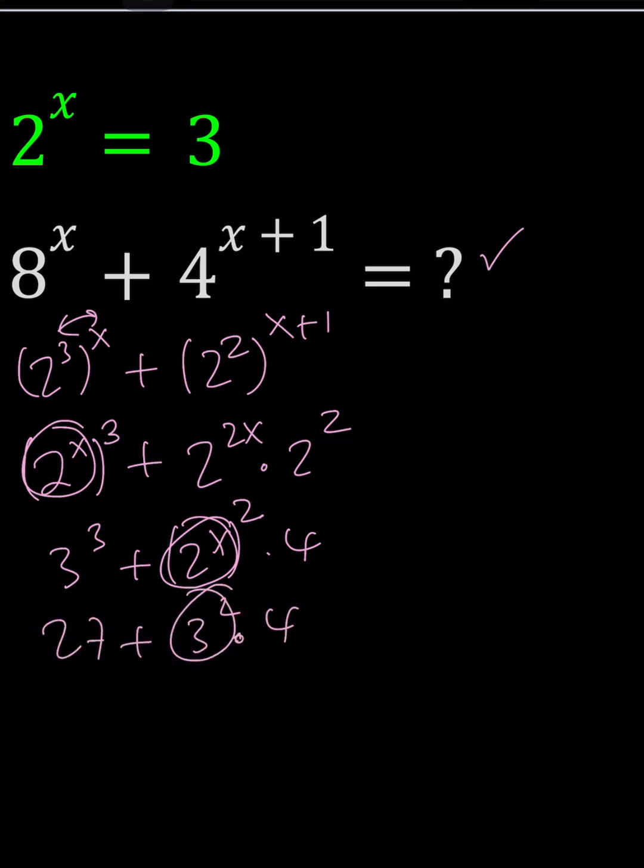3^2 = 9, and 9 × 4 = 36. So this becomes 27 + 36 = 63, which is the final answer.